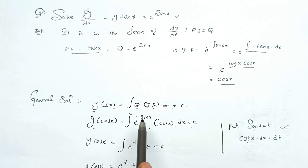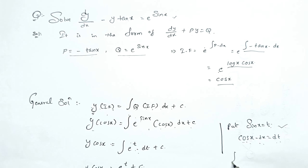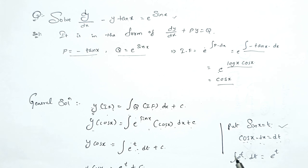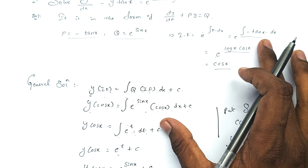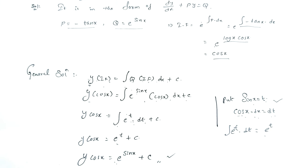So y·cos x equals the integral of e^t dt plus C. Using the formula, the integral of e^t equals e^t. Substituting back, t equals sin x, so y·cos x equals e^(sin x) plus C. This is the general solution.